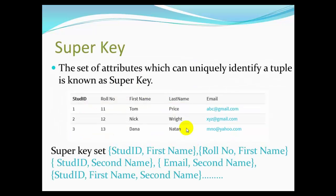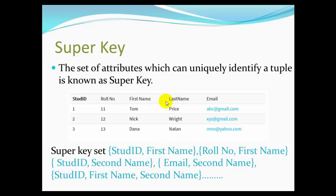The super key — basically, the super key is a set of attributes which can uniquely identify a tuple. For example, student id alone, student id with first name, student id with last name, or role number with first name and last name — these combinations can all uniquely identify a row. So combinations like first name and last name together can form a super key.